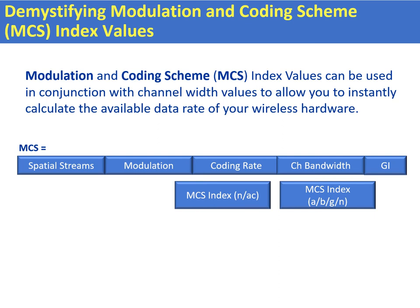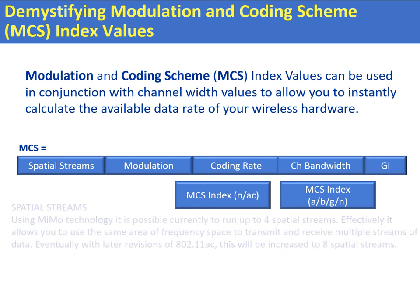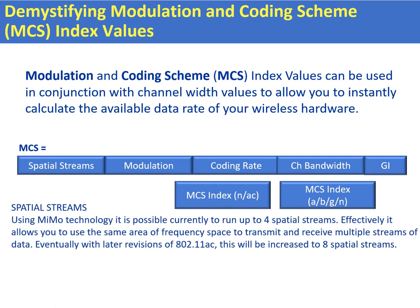The MCS is made up by looking at the number of spatial streams that are going to be used. The more spatial streams effectively indicate the more throughput you're going to achieve. Today with most systems the limit is going to be about four spatial streams. Theoretically on 802.11n it was four spatial streams, and on the 802.11ac products beginning to ship today it's also four spatial streams, but in the future with AC we'll be able to increase this up to eight spatial streams.